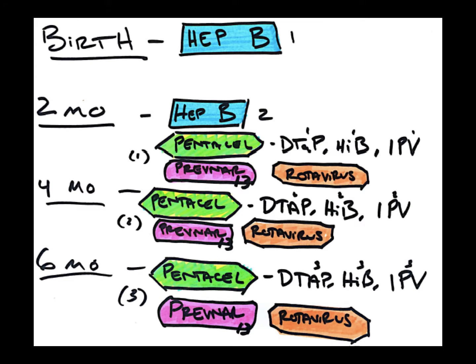So we're going to zoom in on the first section, the first six months in which a child gets vaccinated every two months. There's the first Hepatitis B. The next round of vaccines is at two months. They get the second Hep B.